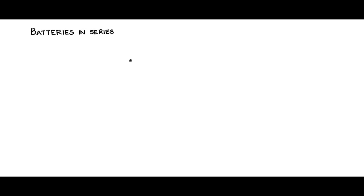In photovoltaic based applications, batteries play a very important role, and most of the times the batteries are not single — there are multiple batteries and they may be either connected in series or in parallel. Batteries connected in series are used to enhance the terminal voltage, and batteries connected in parallel are used to enhance the terminal current. We shall now consider batteries in series and see what are the problems, because you will encounter batteries connected in series or parallel in many photovoltaic based applications.